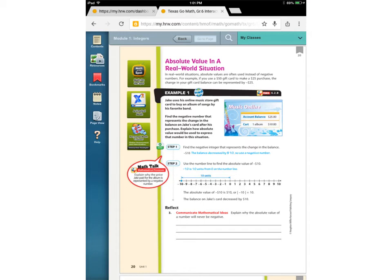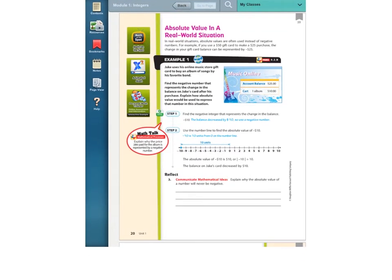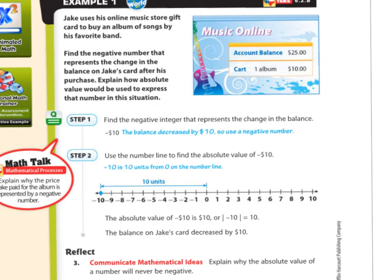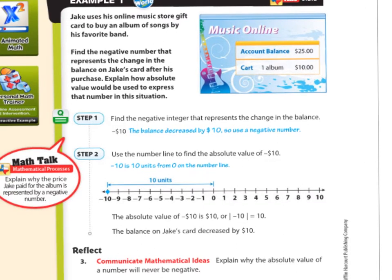In the next example, absolute values come up in an everyday situation. Jake uses his online music store gift card to buy an album. Find the negative number representing the change in balance after his purchase, and explain how absolute value expresses that number. If he bought something for $10, the change in his balance dropped $10 — the change would be negative $10. But we would say it decreased by $10, not decreased by negative $10. That right there is a positive number, and 'decreased' means it dropped. This is a case where we use absolute value.